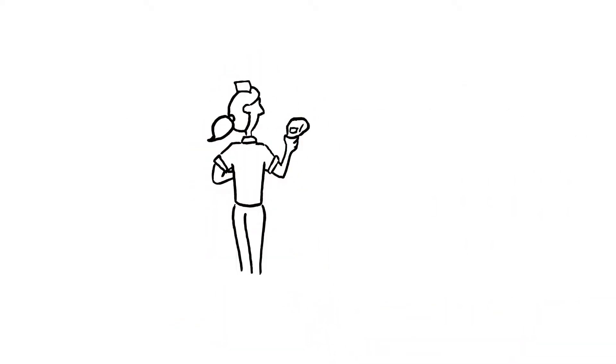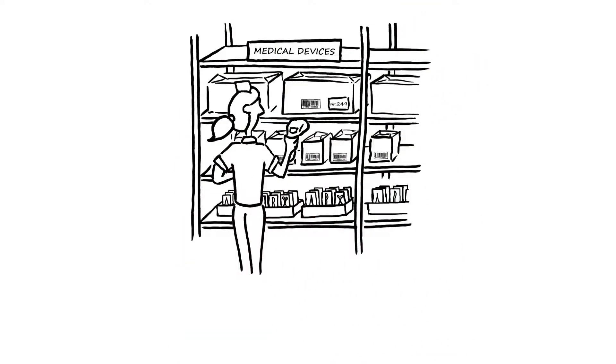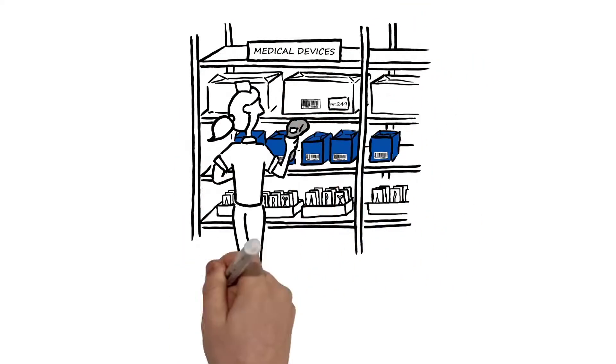Before Laura's hip surgery, the nurse collects the correct surgical package for the operation. When she scans the barcode on the package, the inventory management system automatically records one less in stock.